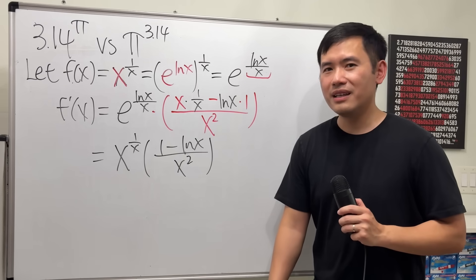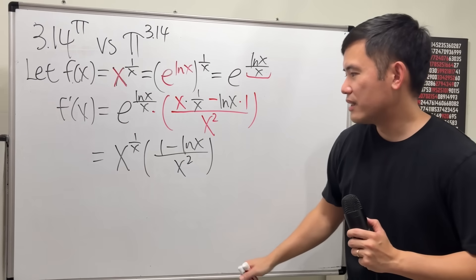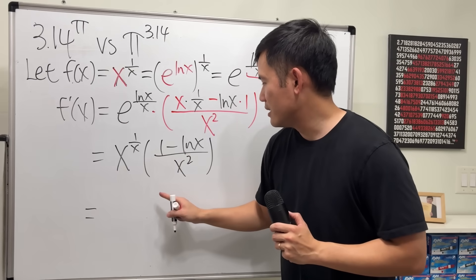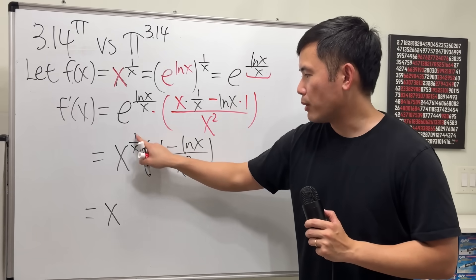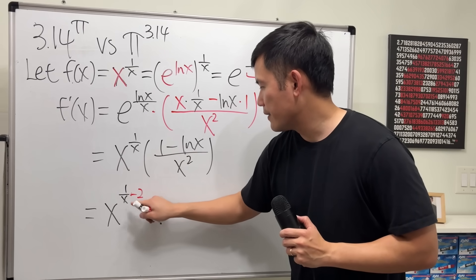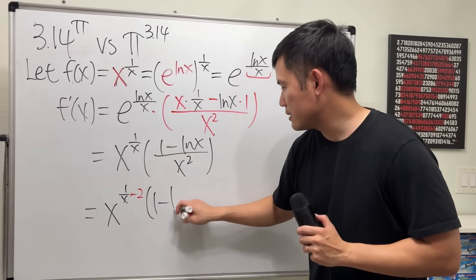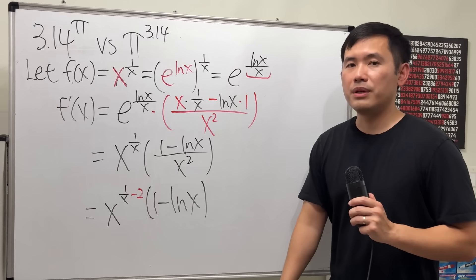And you really don't have to simplify anything else anymore. I think this is totally okay. Maybe if you want, you can combine this and that together. Let's actually do that. This is... We have the same base x, right? So we do this exponent minus the exponent. So that's 1 over x, and then minus 2. And then we still have 1 minus ln x. It's not that necessary, in my opinion.